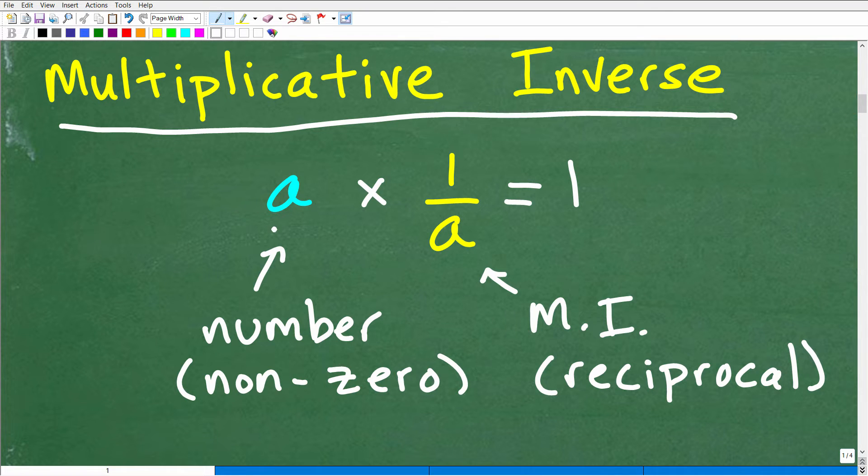So this is a problem that can be solved if you understand what the multiplicative inverse is. So let's take a look at what this means. Let's take a number, a non-zero number. So we're not talking about zero, any other number other than zero. So if we have some number a, and we multiply it by 1 over a, so in other words, we're going to flip this upside down, which we call that the reciprocal.